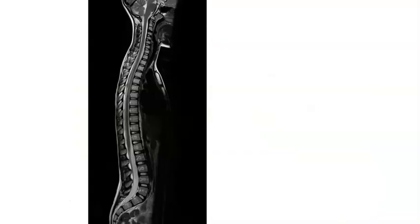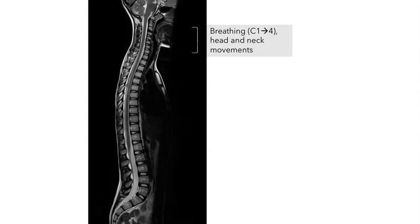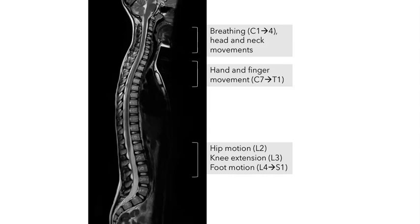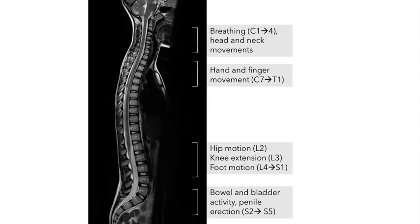The columnar arrangement of the spinal cord has important clinical implications. Injury high in the spinal cord can affect the ability to breathe and head and neck movements, and may not be compatible with life. Damage further down may impair hand or finger movement while leaving breathing intact. Damage at the lumbar II level can affect hip motion, lumbar III affects knee extension, and the lumbar and sacral region governs foot motion. Damage to the most caudal part of the spinal cord can affect parasympathetic functions including bowel and bladder activity. We'll return to some of these topics in a later video.